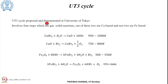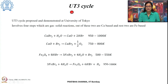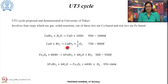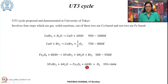The UT3 cycle was proposed and demonstrated by the University of Tokyo — hence the name UT3. It involves four gas-solid reaction steps: two based on calcium and bromine, and two based on iron. CaBr₂ reacts with water to produce CaO and HBr at 950–1000 K. CaO reacts with bromine to produce CaBr₂ and oxygen at 750–800 K. Fe₃O₄ reacts with HBr to produce 3FeBr₂, H₂O, and Br₂ at 500–550 K. FeBr₂ reacts with H₂O to produce Fe₃O₄, 6HBr, and H₂ — the hydrogen evolution step — at 950–1000 K.